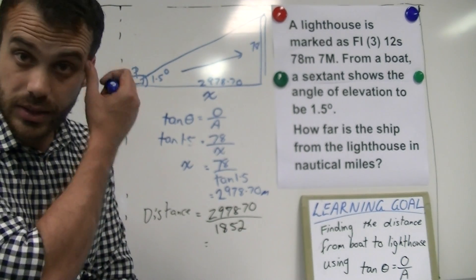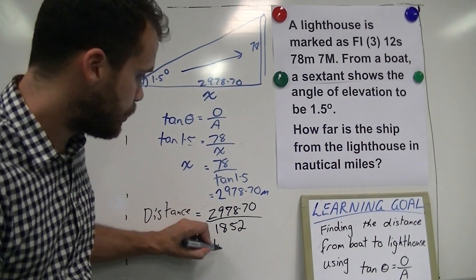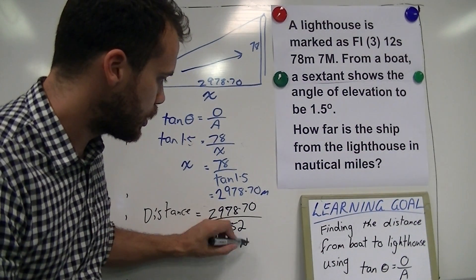2978.70 divided by 1852. When you type that into your calculator, you'll get an answer of 1.61 nautical miles.